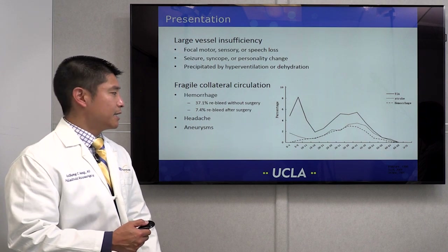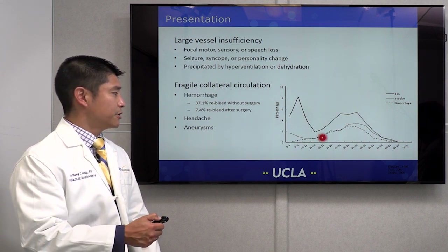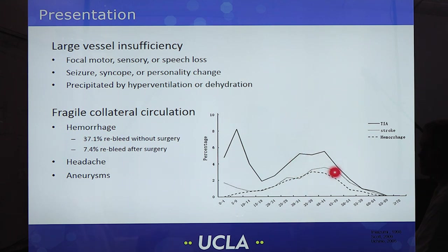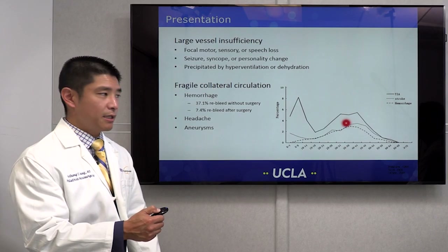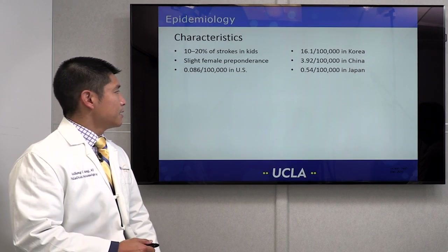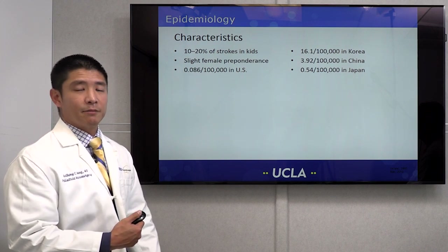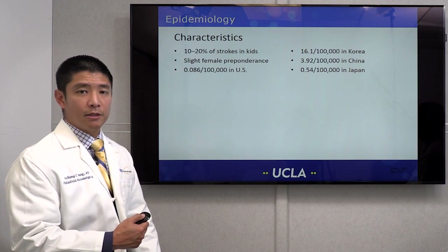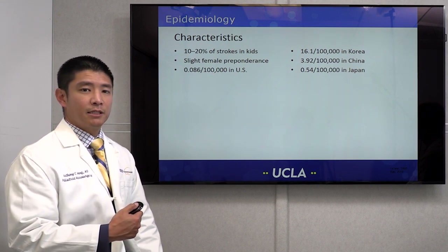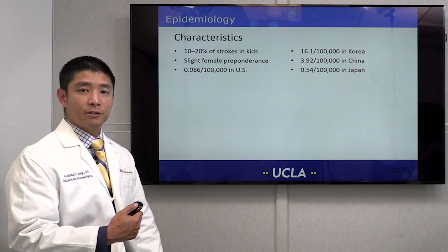When Moya Moya presents, it is typically in young patients — sometimes young children. There's a peak of presentation with ischemic symptoms between the ages of 5 and 10, and then a second peak around age 35 to 45. Most of these patients present with some kind of ischemia, but many patients, especially adults, also present with bleeding or hemorrhage. As I mentioned, it's a very rare disease, but in certain populations it's far more common. In North America, we see Moya Moya present across a wide variety of ethnic backgrounds, though more frequently in some than others.